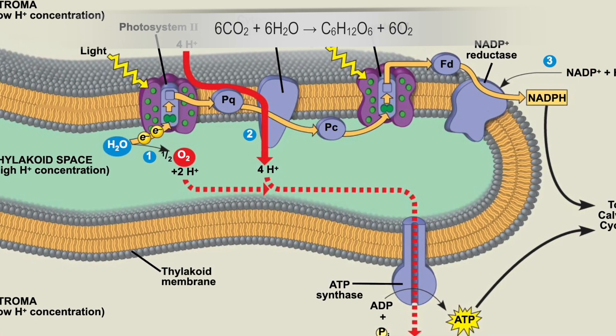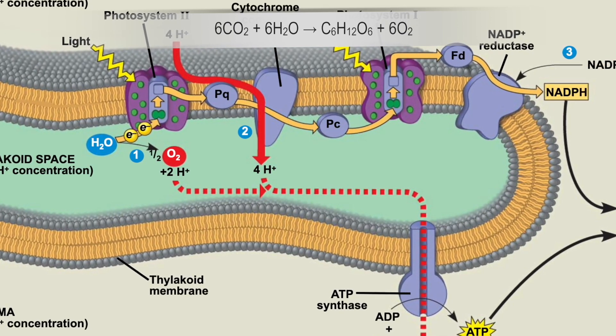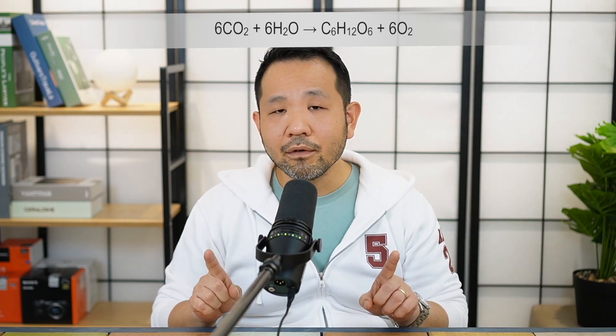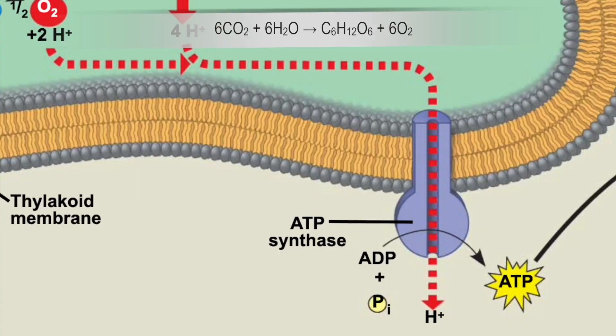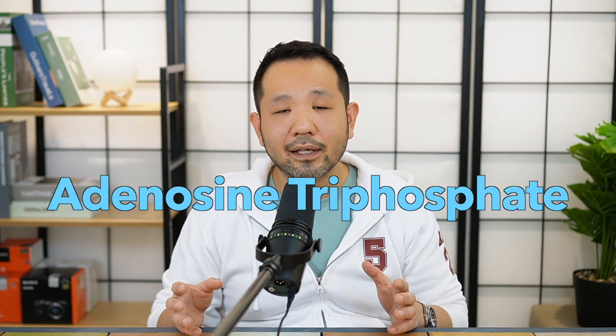Protons, since they're charged, cannot simply diffuse back out into the stroma through the phospholipid bilayer. The only way they can do this is through the ATP synthase. As they fall out of the thylakoid lumen into the stroma, the release of that energy through what we call chemiosmotic force allows ATP synthase to turn a little turbine that combines ADP — adenosine diphosphate — and an inorganic phosphate molecule into adenosine triphosphate, or ATP. So that first objective of the light reaction has been met.